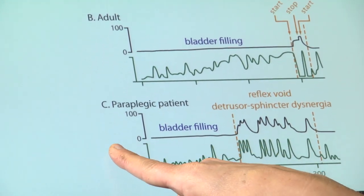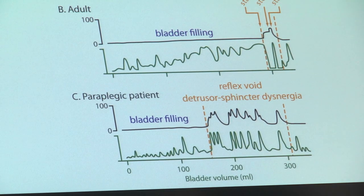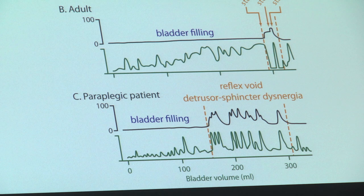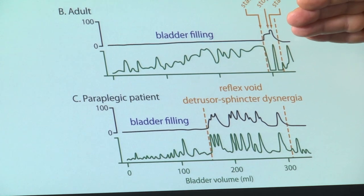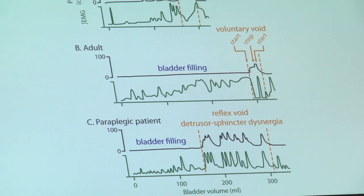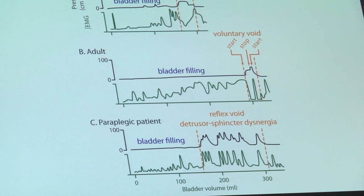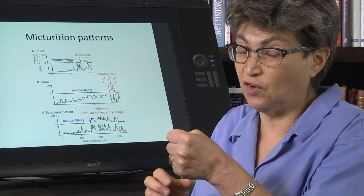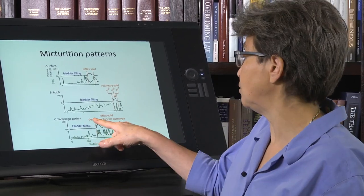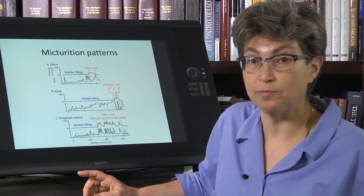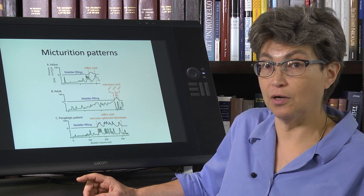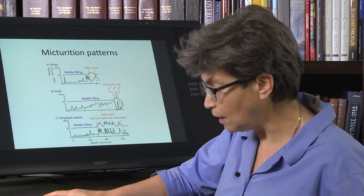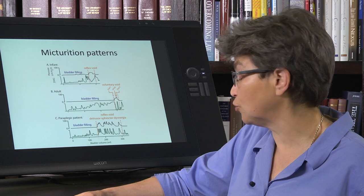In a spinal cord injured patient, there is a reversion to the reflex voiding, but in that person, the sphincter does not relax. So in the adult, there's a signal from the pons to the sacral cord, relax the external urethral sphincter. In the spinal cord injured patient, that does not happen. So what happens is that as the bladder fills, there is a reflex contraction of the detrusor, but the external urethral sphincter remains closed. And this is called detrusor sphincter dyssynergia. It's a big problem and it has to be treated because obviously the urine has to get out. So this is one of the number one problems that we have to look for in virtually all spinal cord injured patients.